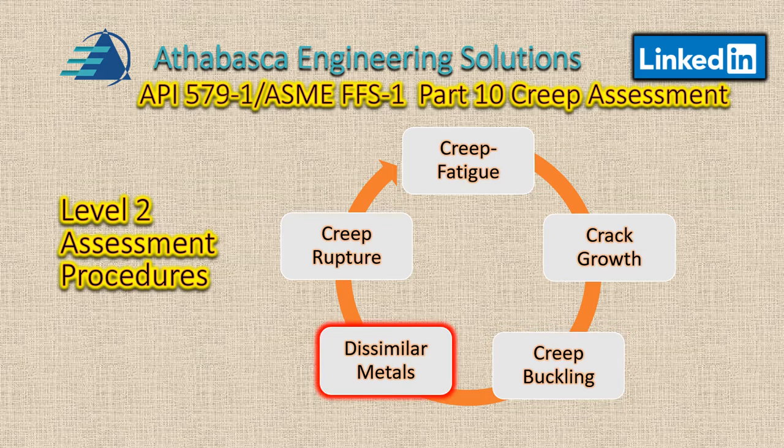CREEP fatigue assessment of dissimilar metals is referred to in section 10.5.6, and it is applicable to 2¼Cr-1Mo materials, 2¼Cr-1Mo vanadium, austenitic stainless steels, and other dissimilar weld metal joints made of stainless steel or nickel-based filler metals. This is for very high temperature, heat-resistant materials.